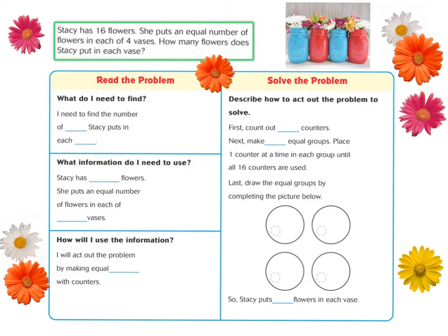Let's take a look at our first problem. Stacey has 16 flowers. She puts an equal number of flowers in each of four vases. How many flowers does Stacey put in each vase?